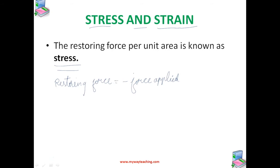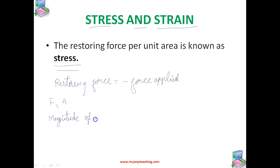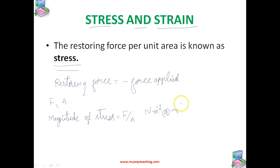If F is the force applied and A is the cross-sectional area of the body, then the magnitude of stress can be written as F by A. The SI unit of stress is Newton per meter square, since the SI unit of force is Newton and area is meter square. We can also say Pascal.